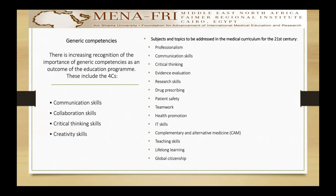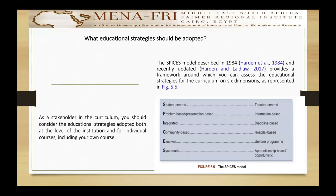There is increasing recognition of the importance of key competencies as the outcome of the education program. The curriculum includes the four Cs: communication, collaboration, critical thinking, and creativity skills. In the present century, there are certain areas that should be included in the curriculum, as shown on this screen. As a stakeholder in the curriculum, you should consider the educational strategies adopted at both the level of the institution and for the individual course, including the SPICES model described by Harding in 1984.